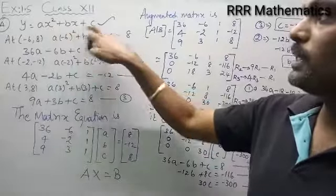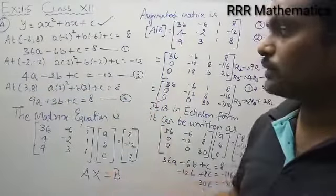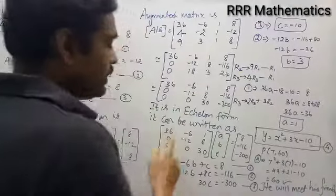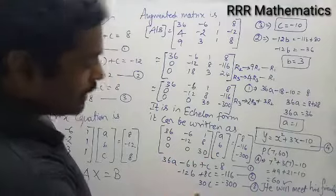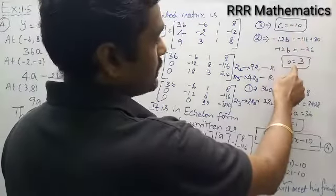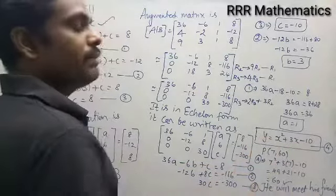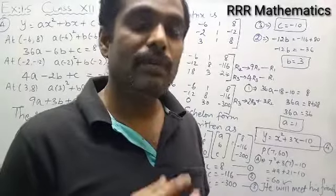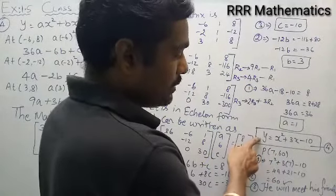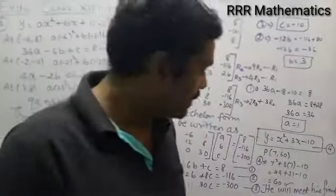A small review: y = ax² + bx + c is given, with three points (−6, 8), (−2, −12), (3, 8). Substituting gives 3 linear equations in a, b, c. Write the matrix equation AX = B, then the augmented matrix, reduce to echelon form, and use back substitution. We get c = −10, b = 3, a = 1, giving y = x² + 3x − 10. When x = 7, y = 60, so he will meet his friend.